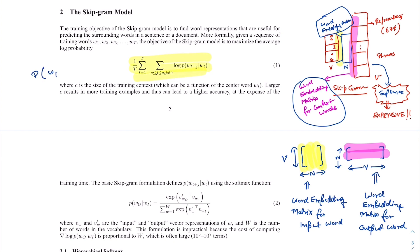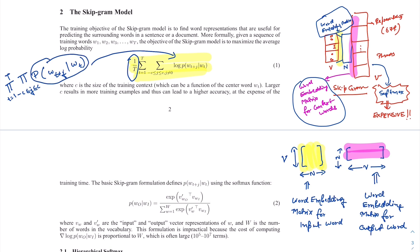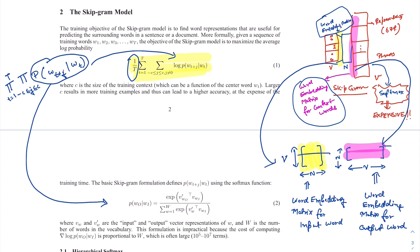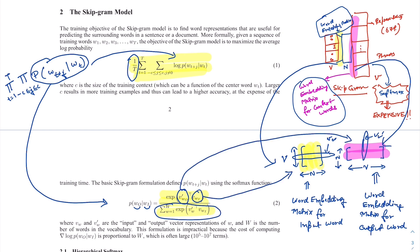The skip-gram objective is to maximize the probability of surrounding words occurring given the center word's embedding, across all neighboring words (C left and C right) and across all words in the training corpus. Taking the log converts it to a summation averaged over the corpus. The probability is computed via softmax using two matrices: the word embedding matrix for input words (v_w) and for output/context words (v_w'). Each word has a representation in both matrices.